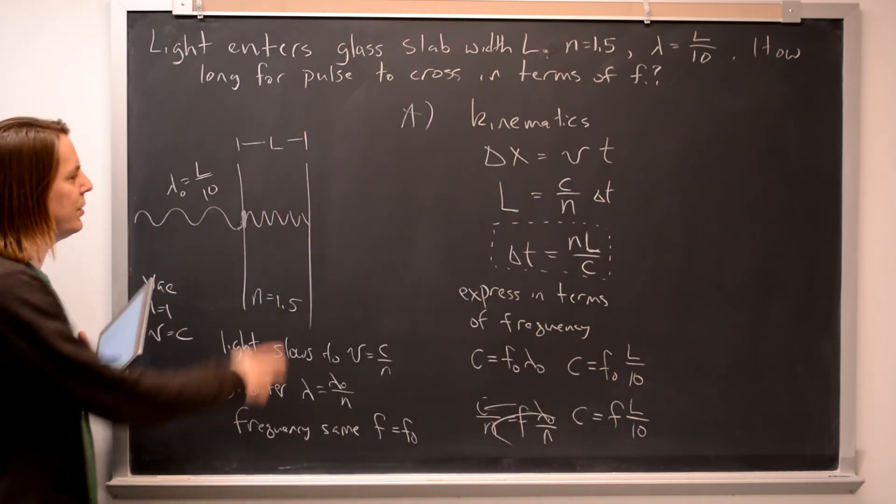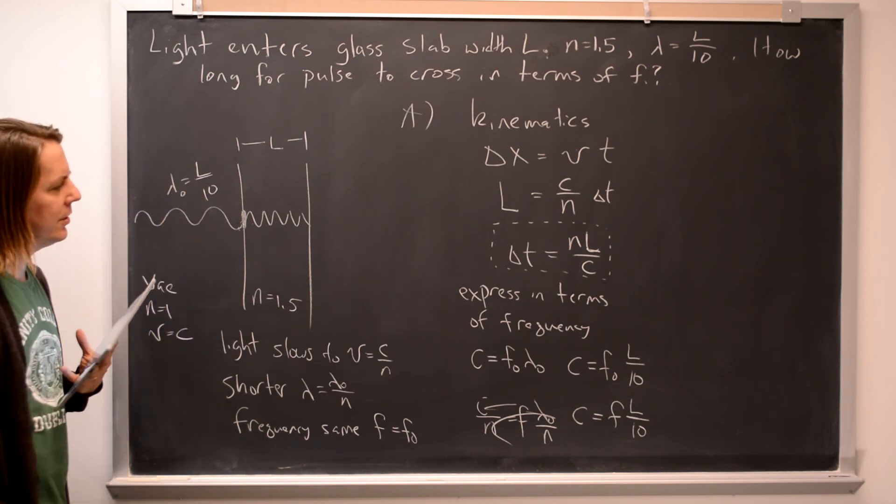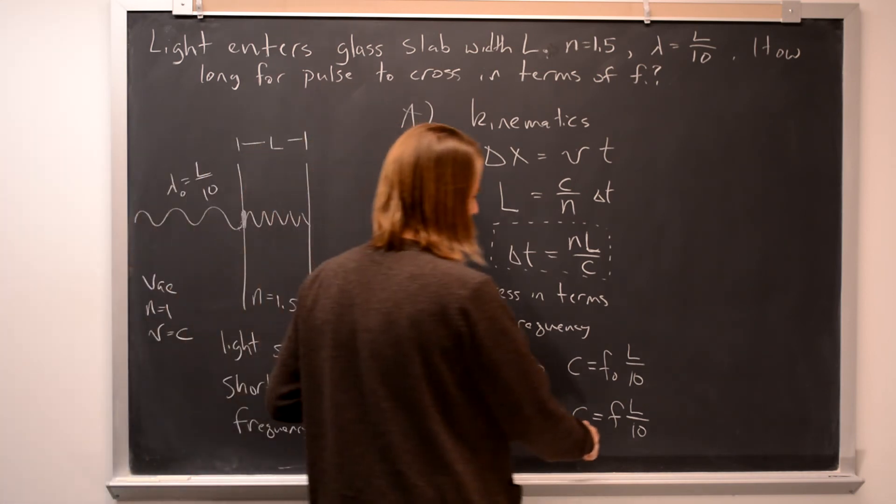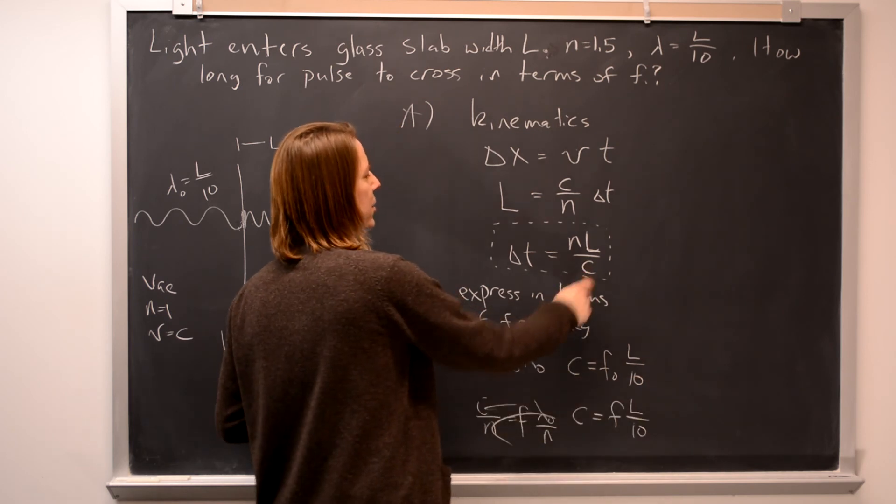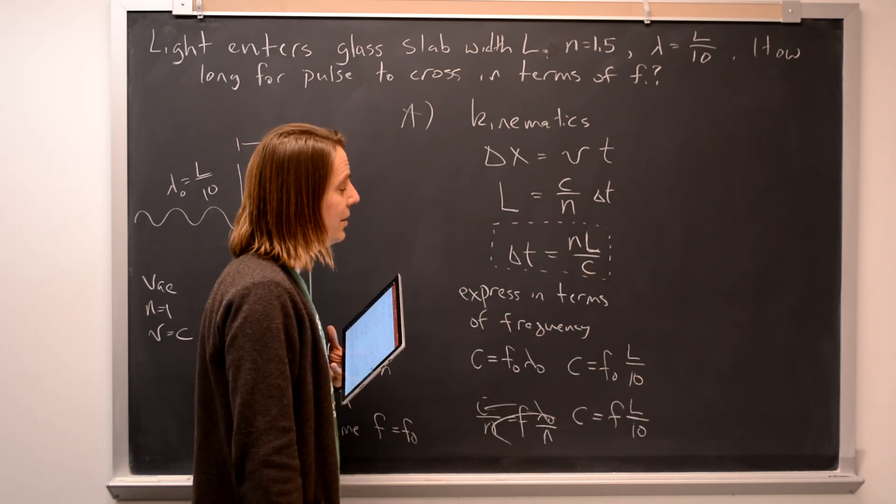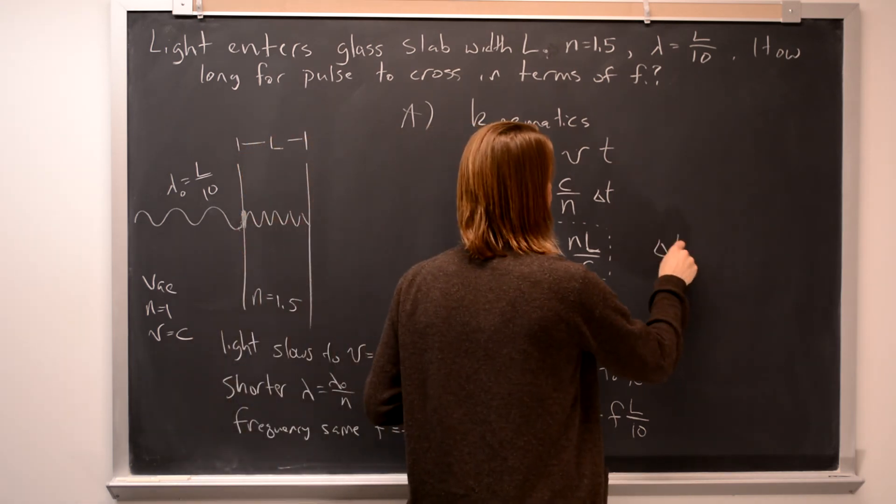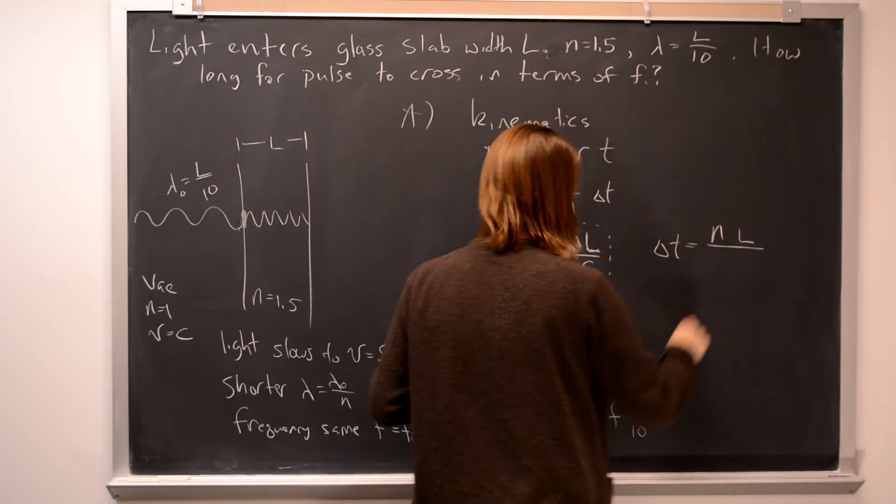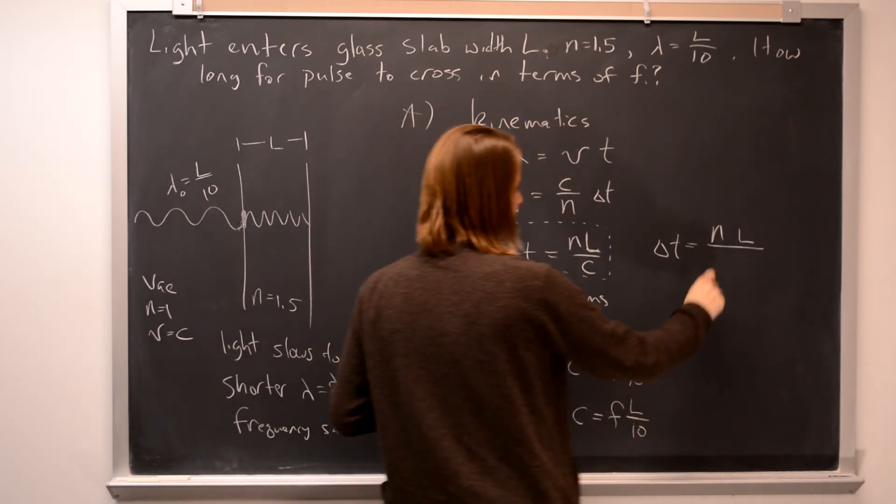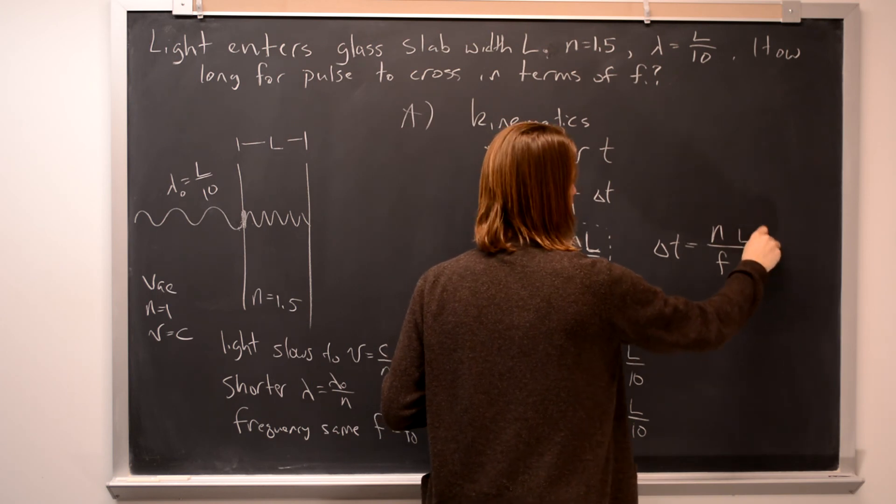Speed of light. If the frequencies, the frequencies are the same. It's a vacuum wavelength, L over 10. So now we're going to use this and stick it right there. Because we weren't allowed to have C in the answer. And you can see it's going to get rid of the L also. So we're going to get delta T is N times L over the speed of light. Frequency times L over 10.